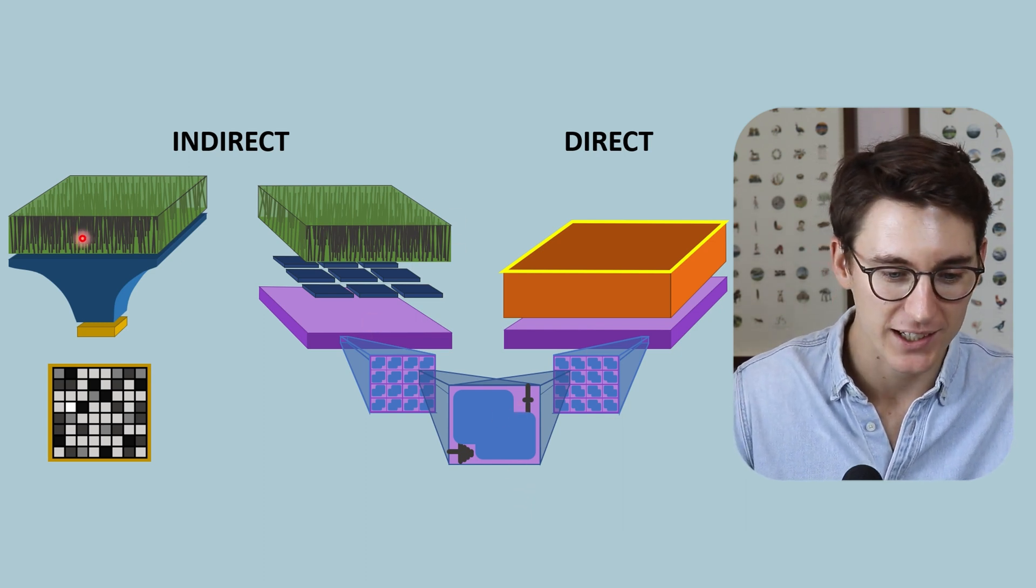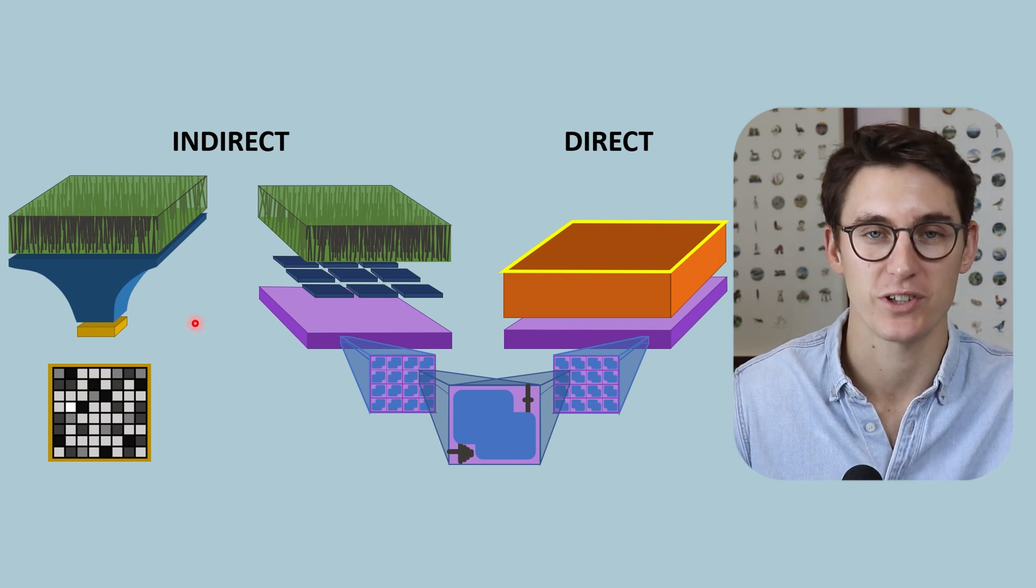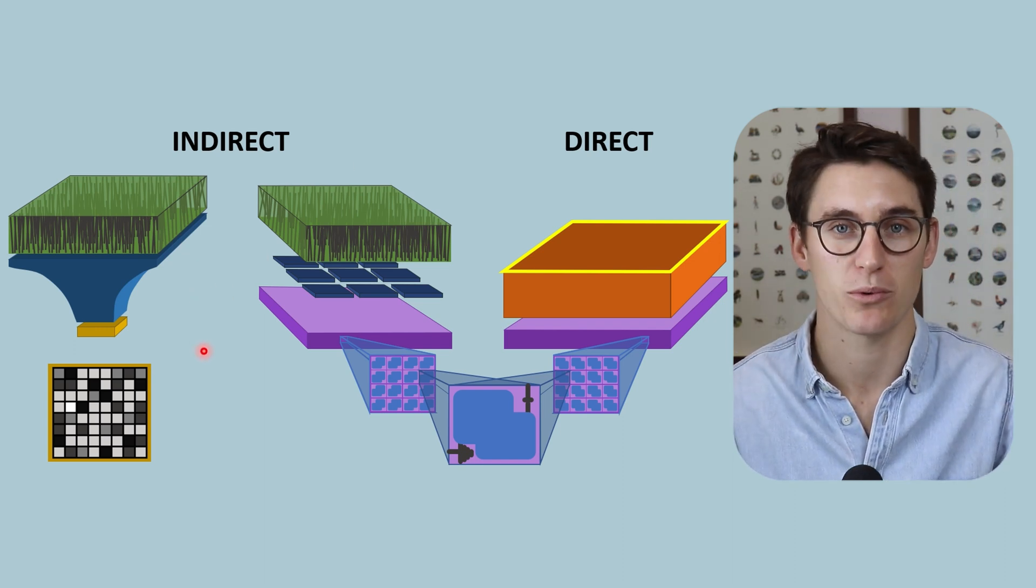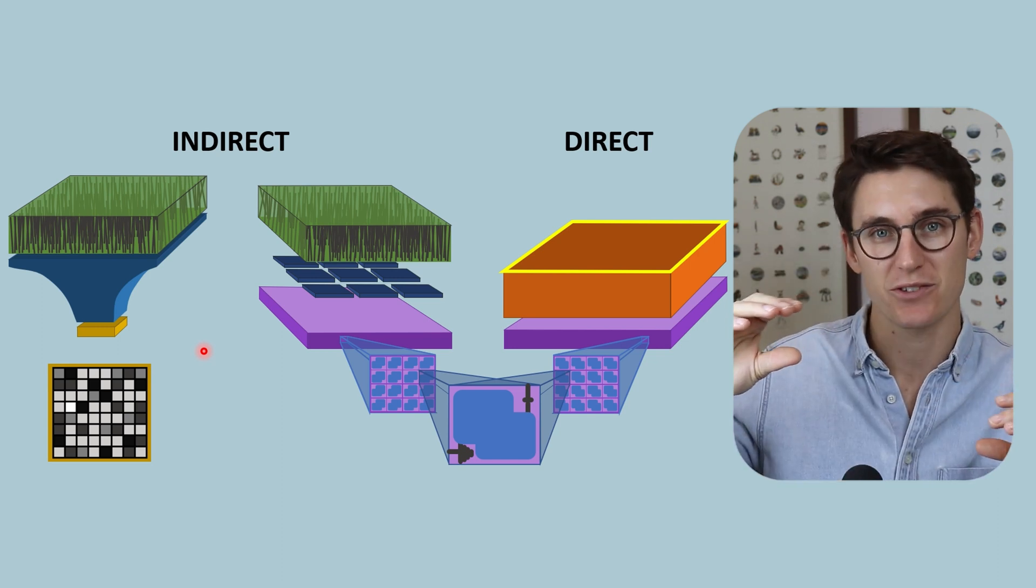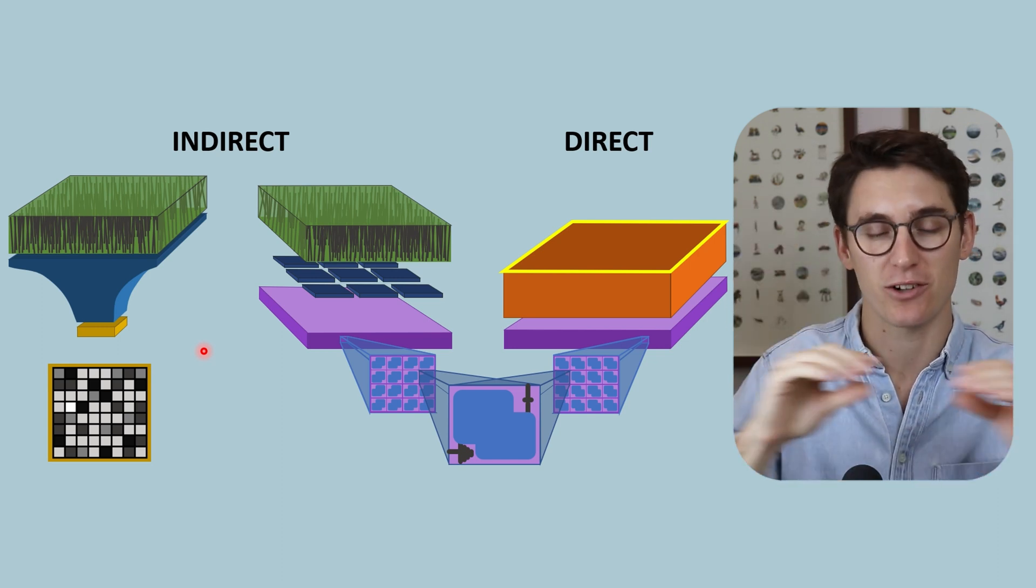So we need this scintillating layer in our indirect radiography systems. And we've seen a scintillation layer before when we looked at screen film radiography. We saw those two intensifying screens that sandwiched our film.